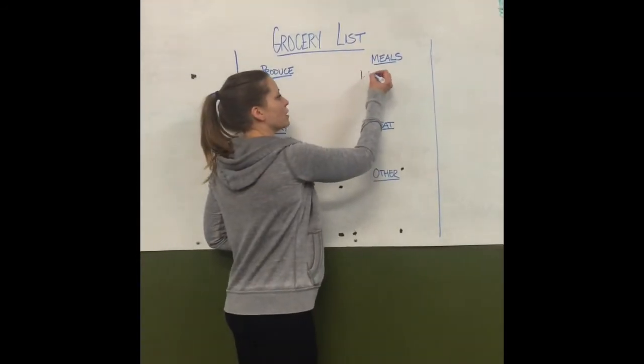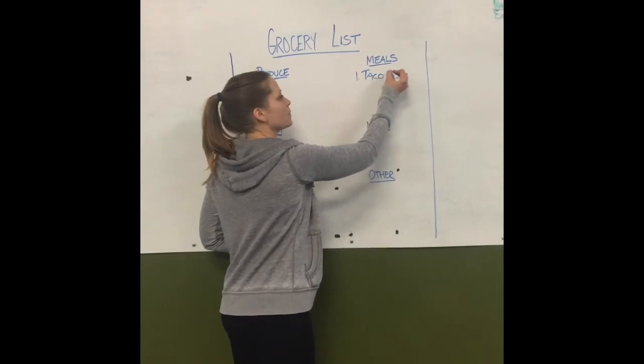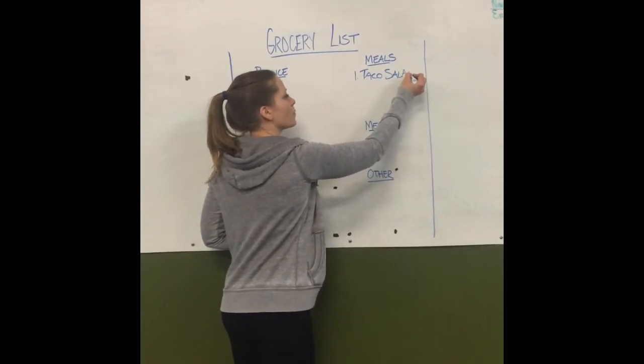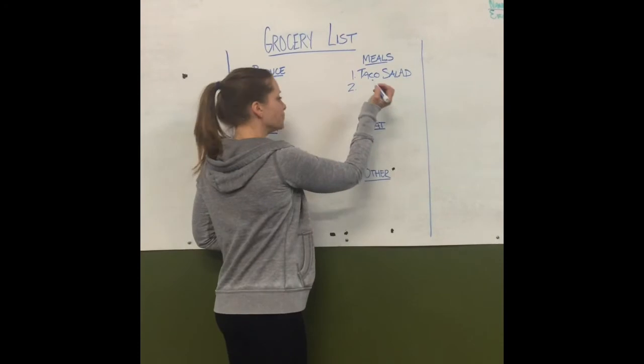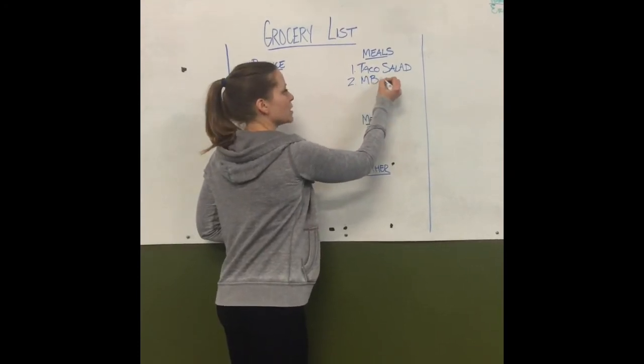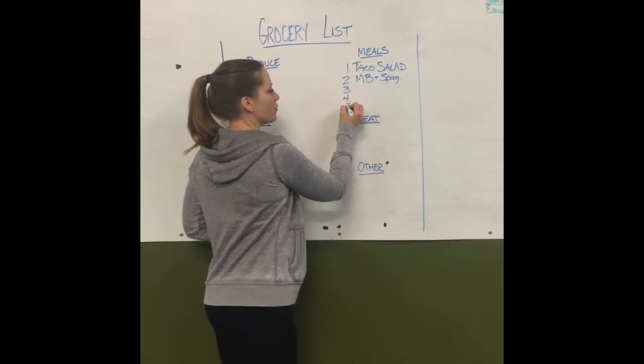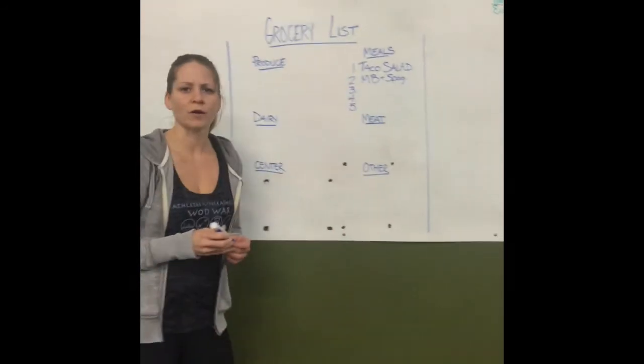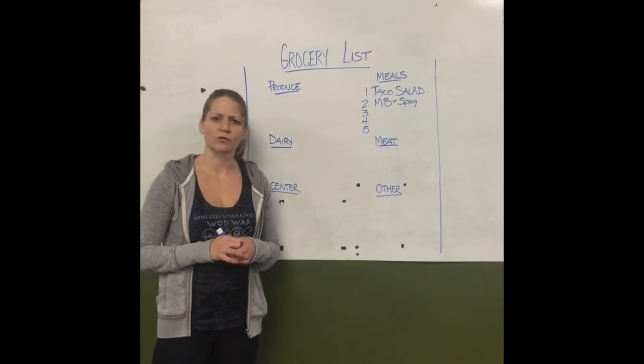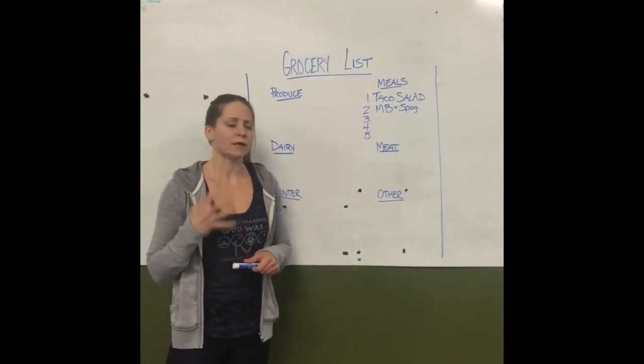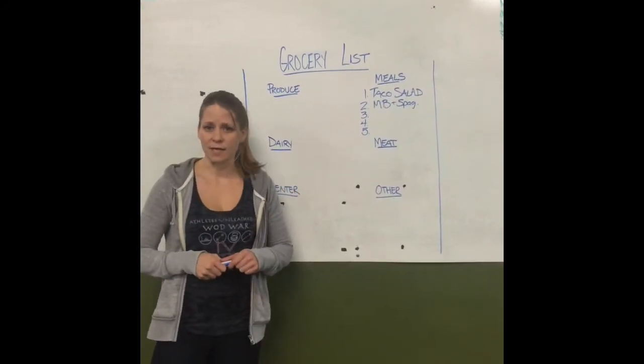Say one night I'm going to make taco salad. Another night I'm going to make meatballs and spaghetti squash. I end up planning out four meals for my week or five meals somewhere in there because I know a couple nights we're going to have leftovers, a couple nights we're going to be on the go. But I at least have a base of four to five meals on there.